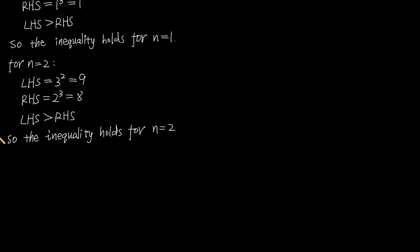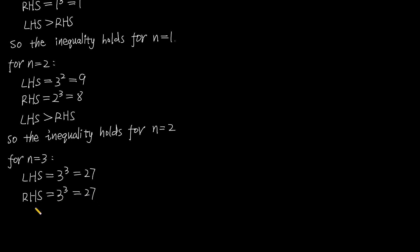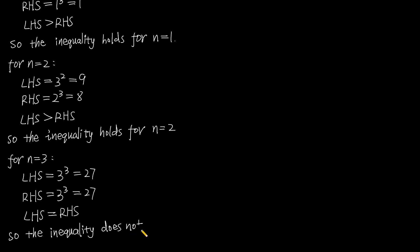For n equals 3: left hand side equals 3 to the power of 3, which equals 27. Right hand side also equals 3 to the power of 3, which equals 27. So left hand side equals right hand side, and the inequality does not hold for n equals 3.